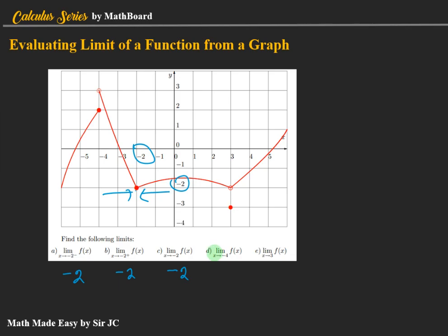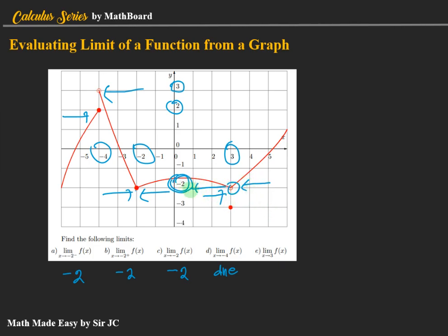For x approaches negative four: this is our negative four. From the left, positive two is being approached. From the right going to negative four, three is being approached. Since two is not equal to three, the limit does not exist. For letter E, the limit of f of x as x approaches three: from the left, negative two is being approached, and from the right, still negative two. Since negative two equals negative two, the limit of the function is negative two.